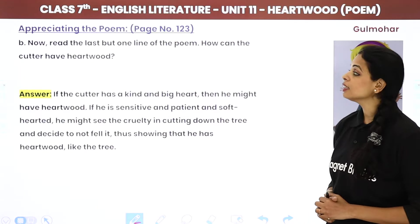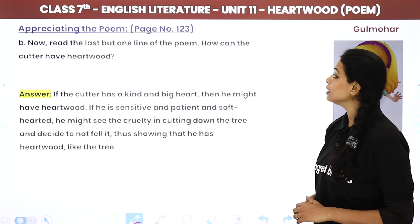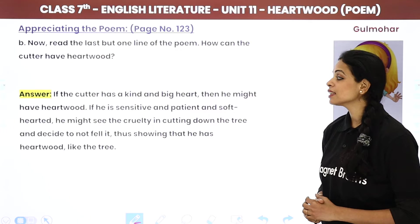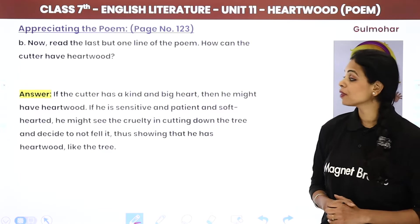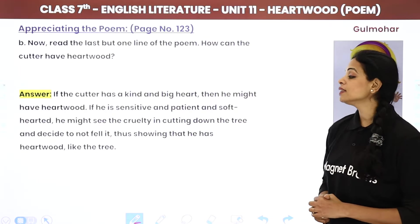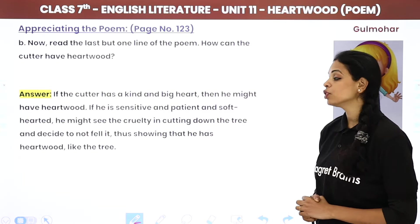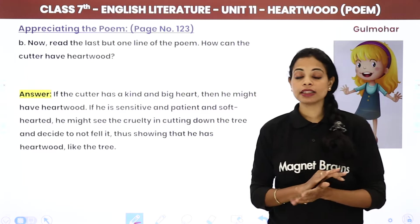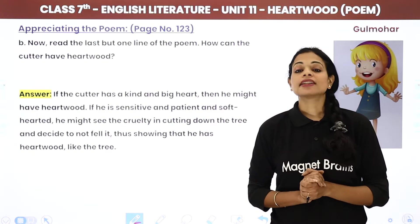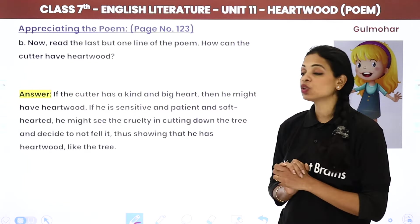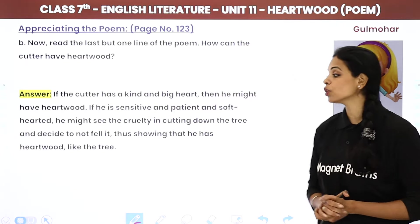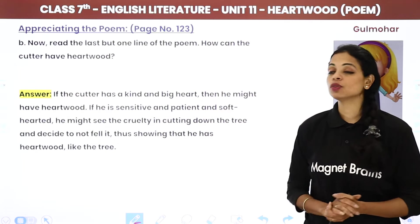Next: read the last but one line of the poem. How can the cutter have heartwood? If the cutter has a kind and big heart — if he is sensitive, patient, and soft-hearted — he might see the cruelty in cutting down the tree and decide not to fell it. Thus, showing that he too has heartwood like the tree.